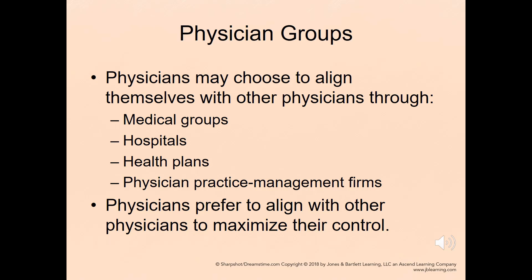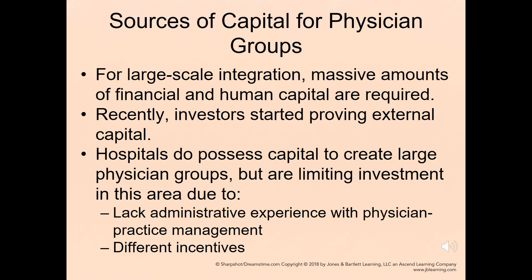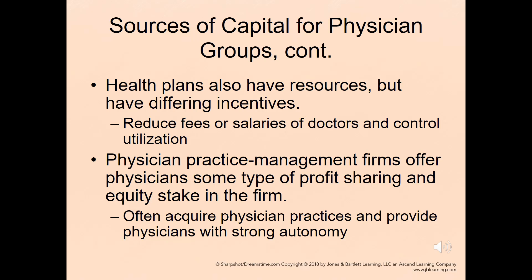Physicians may choose to align with other physicians through medical groups, or with hospitals, health plans, or physician practice management firms. Most physicians prefer to align with other physicians to maximize their control. For large-scale integration, massive amounts of financial and human capital are required, and investors have started providing external capital. Hospitals possess capital to create large physician groups but are limiting investment due to lack of administrative experience with physician practice management. Health plans also have resources, but have differing incentives — to reduce fees or salaries and control utilization. Physician practice management firms offer physicians profit sharing and an equity stake in the firm, often acquire physician practices, and provide physicians with strong autonomy.